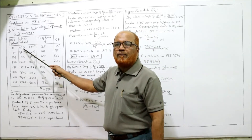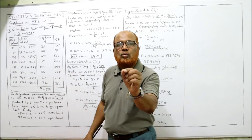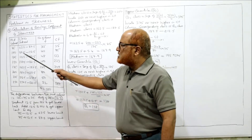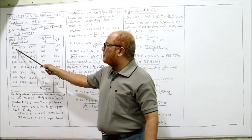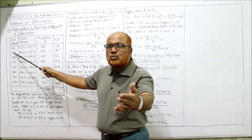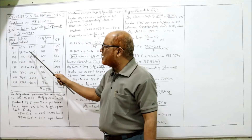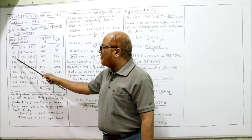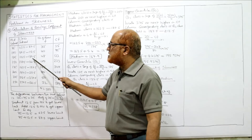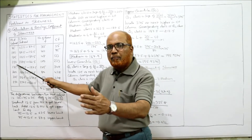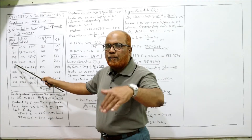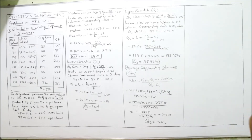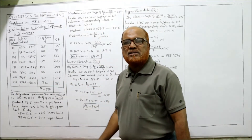We can verify: the mid value equals (lower limit + upper limit) / 2, so (62.5 + 87.5) / 2 = 75. Similarly, for mid value 100: 100 − 12.5 = 87.5 and 100 + 12.5 = 112.5. Continuing this way, all mid values are converted into class intervals: 137.5–162.5, 162.5–187.5, and so on.